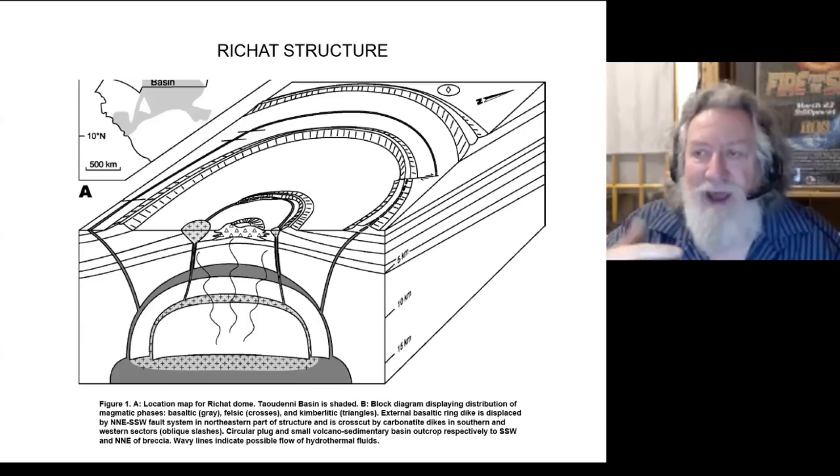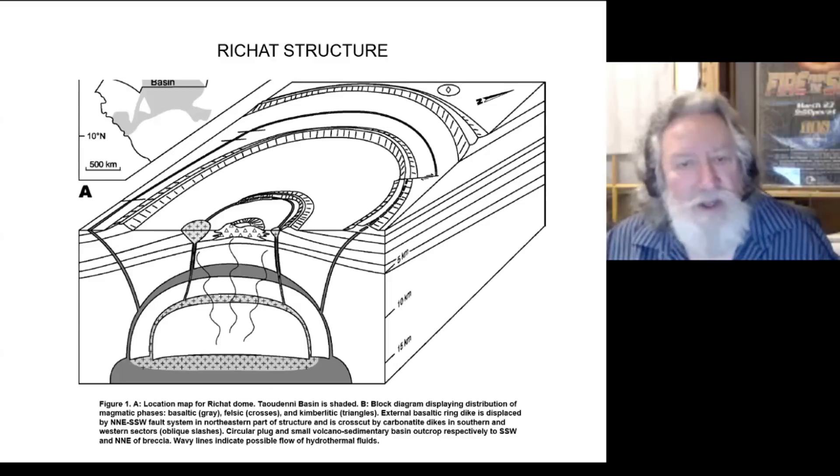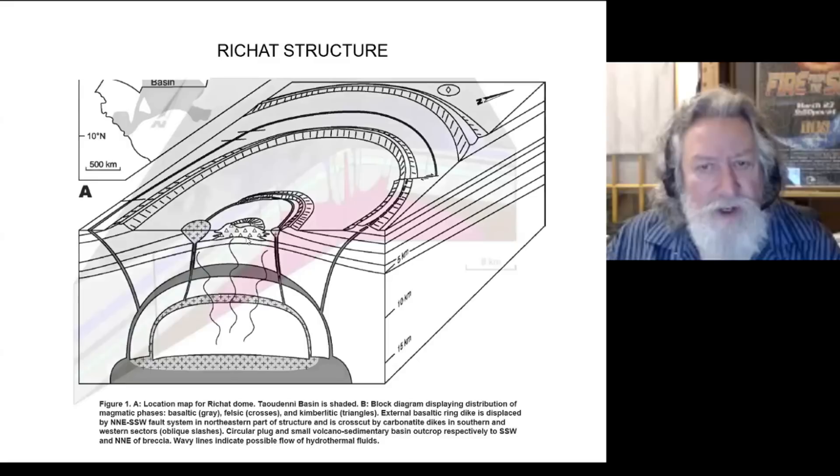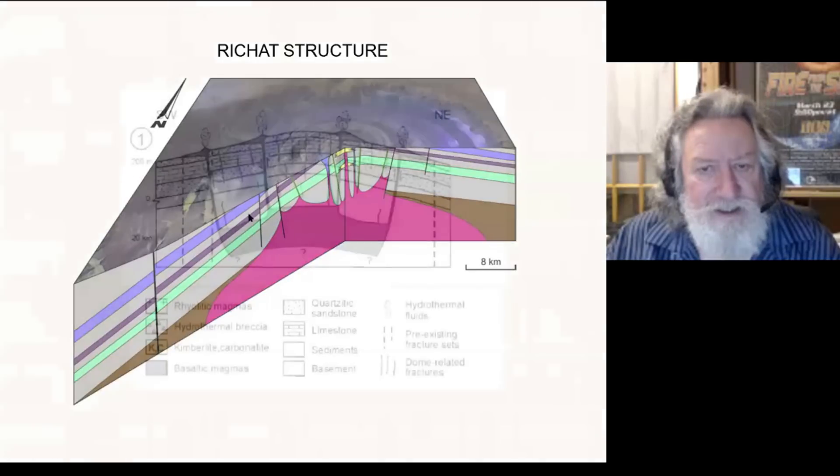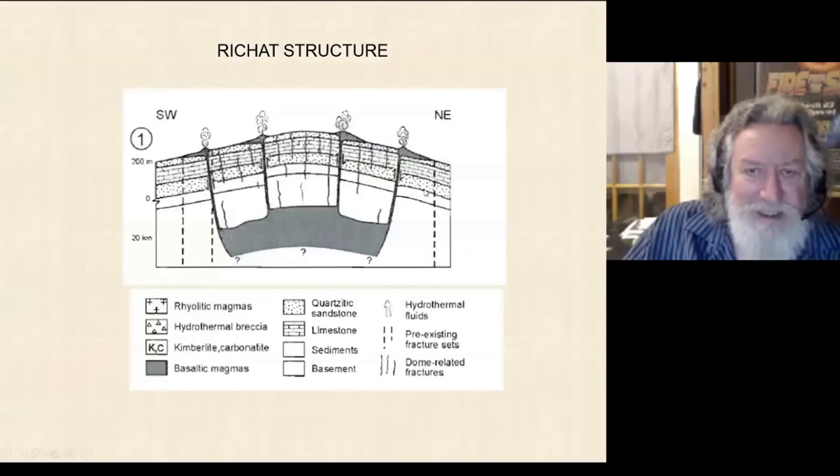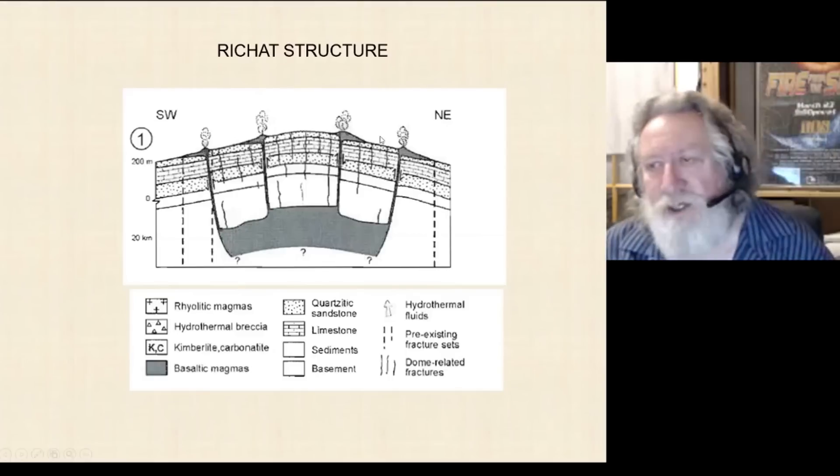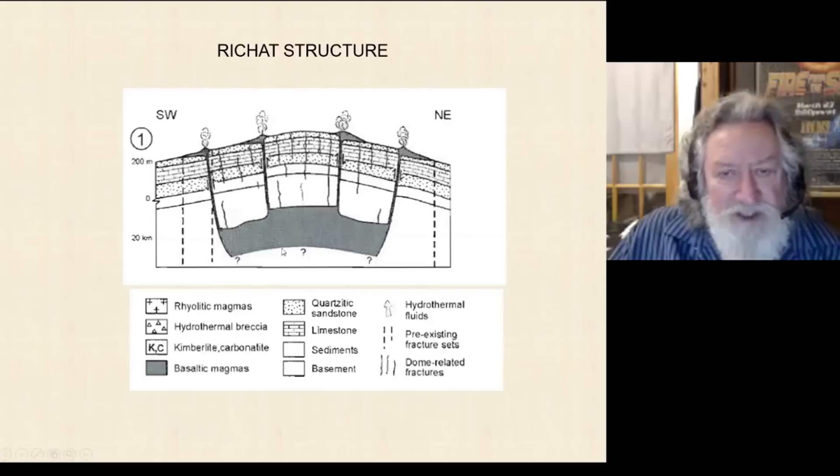And of course, that is oftentimes how you identify the distinct types of magma, because for example, here in these layers, you've got, let's see, I might have a better one here. Let's get to this. Okay. So in this cross section of the structure, you can see that the dots are sandstones and then the little blocks diagram here.